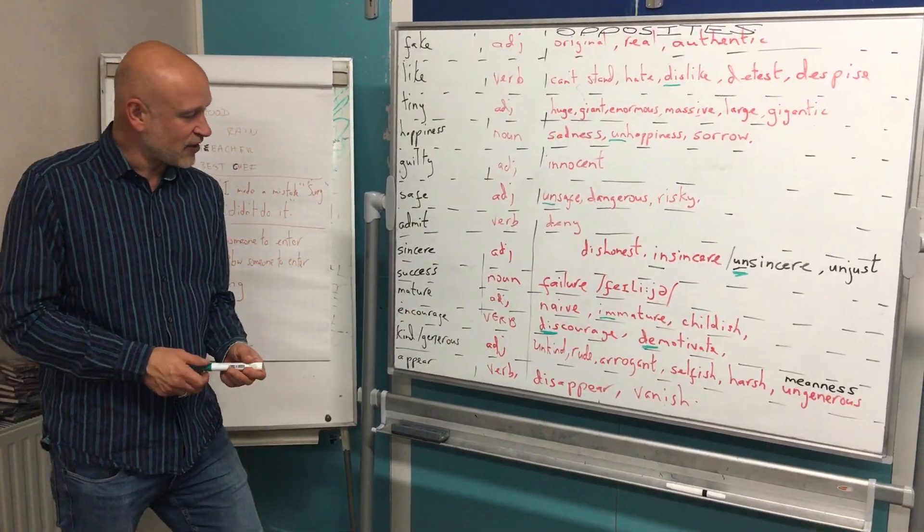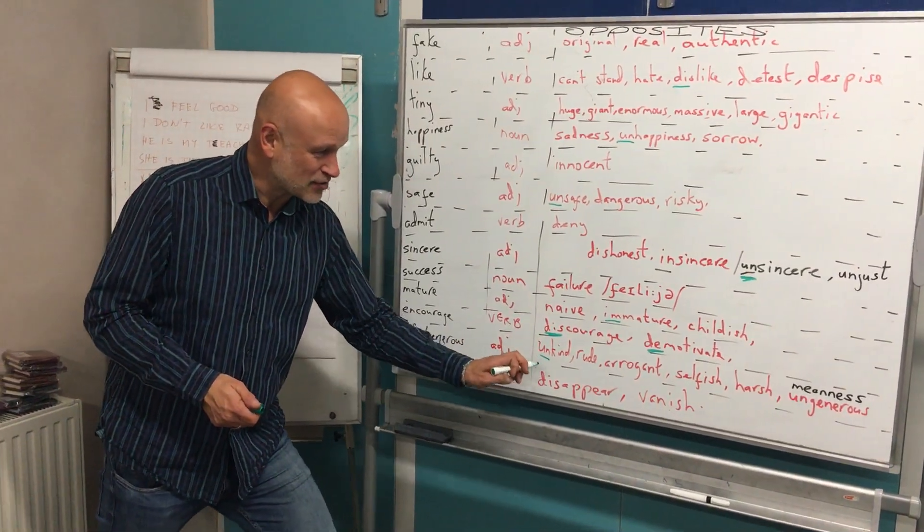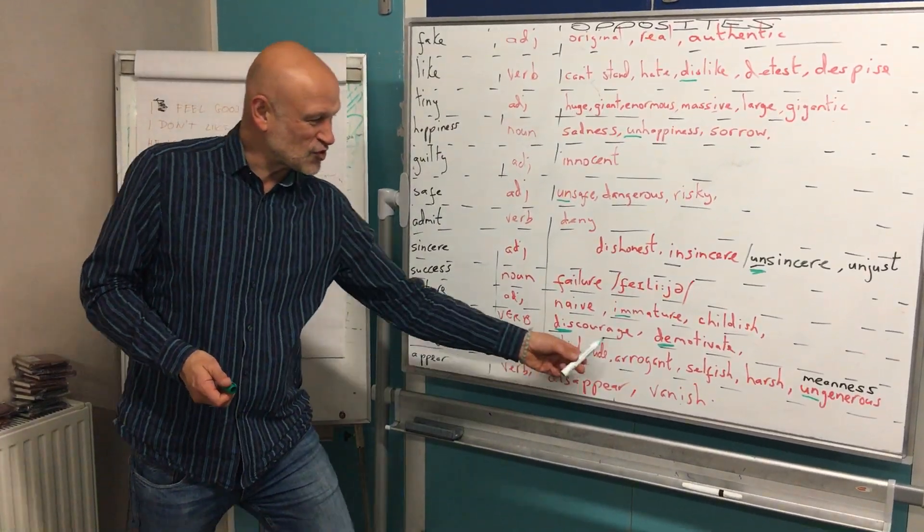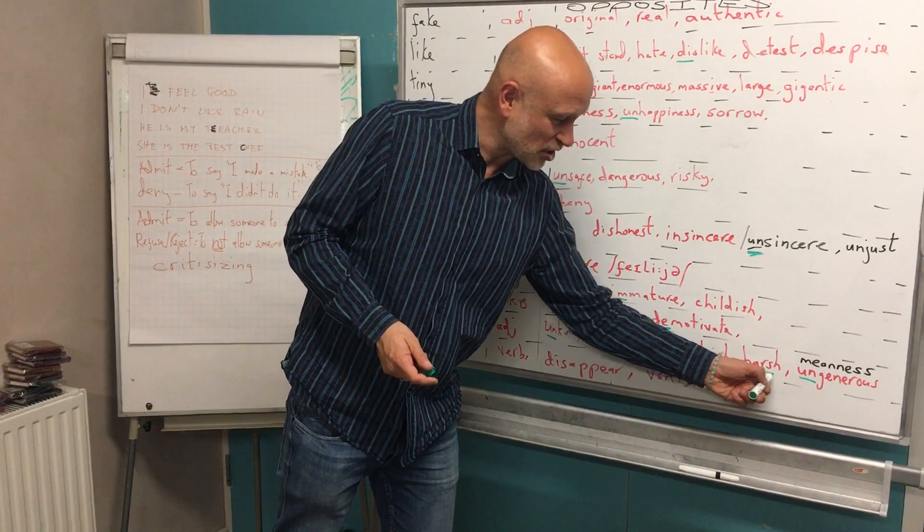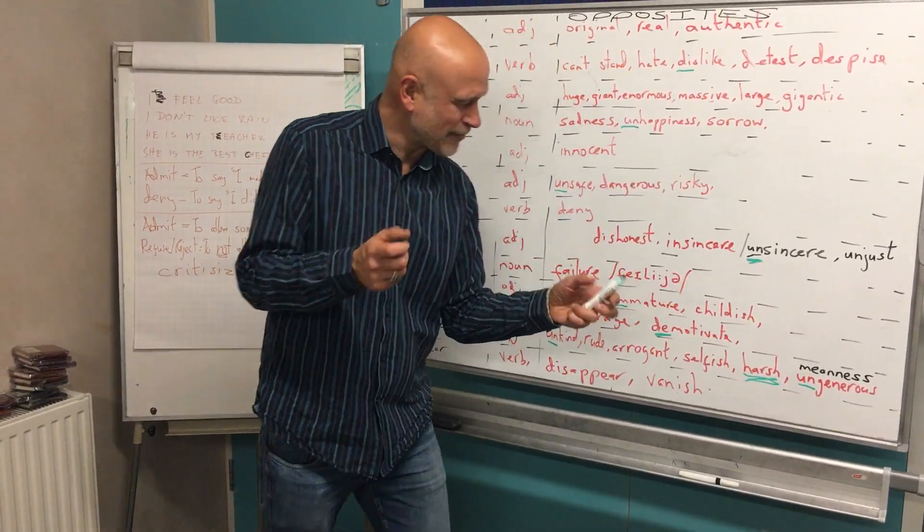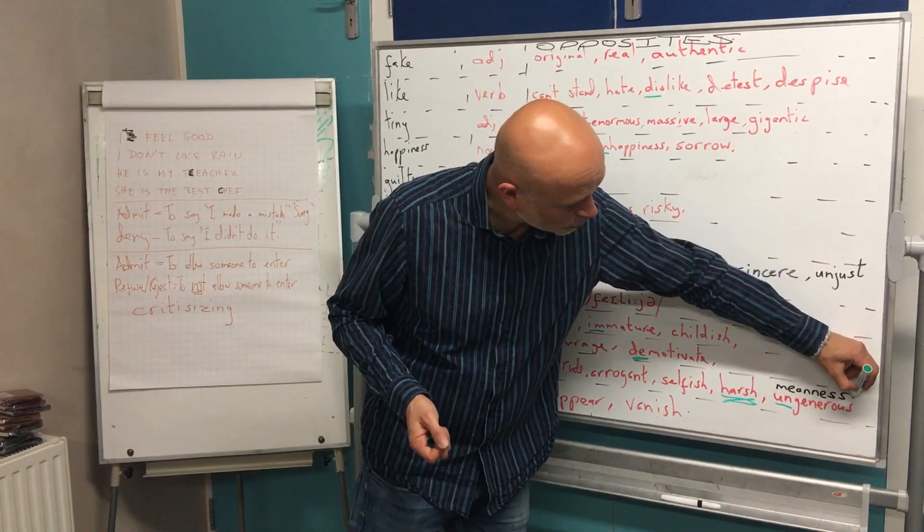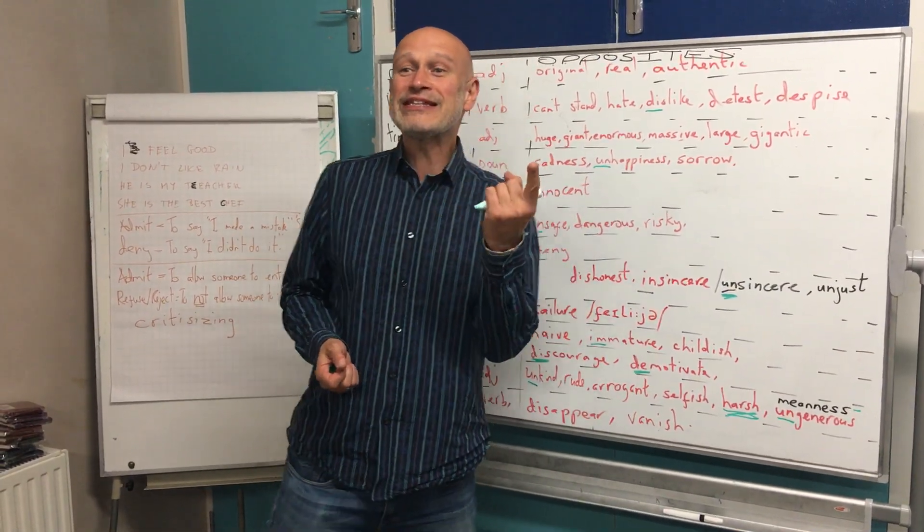Kind and generous. It's an adjective. Unkind. Great one. Ungenerous. Rude, arrogant, selfish, harsh. I liked that one. It's not a direct opposite, but I like it. And then we learnt this one on the next exercise: meanness.